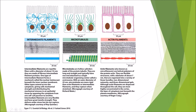Actin filaments are mainly found towards the outside of the cell. They are helical polymers of the protein actin — flexible structures with a diameter of about 7 nanometres, organized into a variety of linear bundles, two-dimensional networks, and three-dimensional gels. Although actin filaments are dispersed throughout the cell, they are most highly concentrated in the cortex, which is the layer of cytoplasm just beneath the plasma membrane.